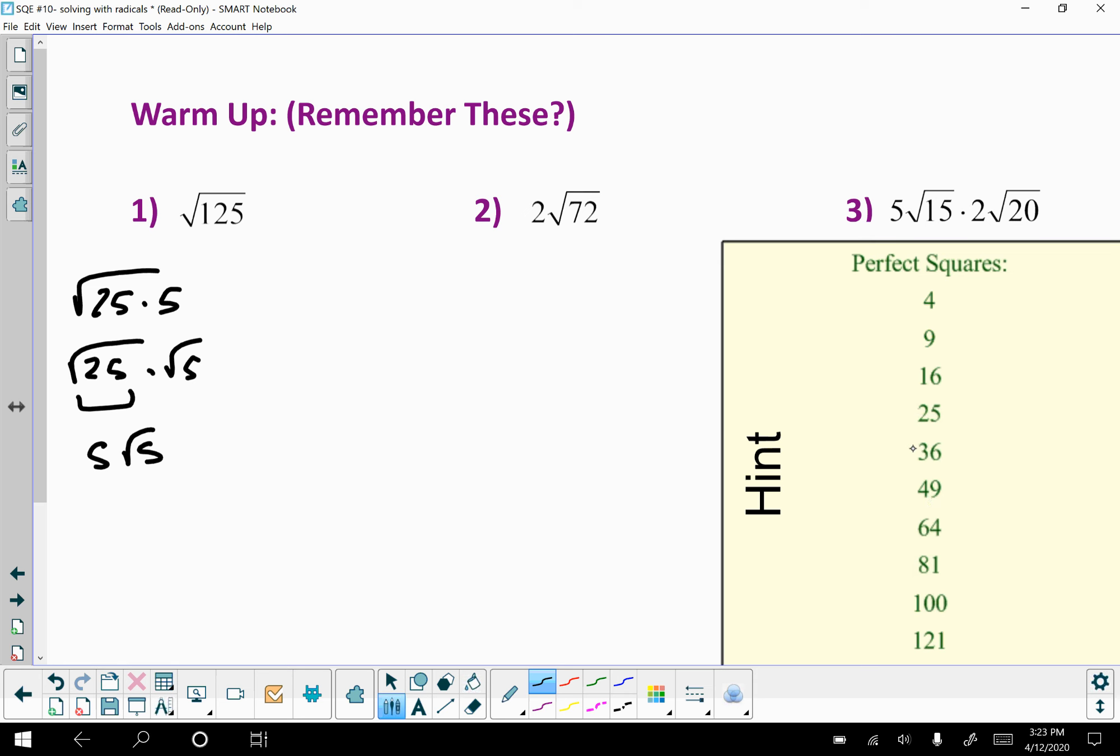Okay, so 72. So 36 times 2 is going to work, so I'm going to do 2 times 36 times 2, because 36 times 2 is 72. So 36 is the biggest perfect square. Square root of 36 is 6.